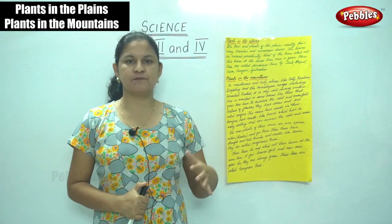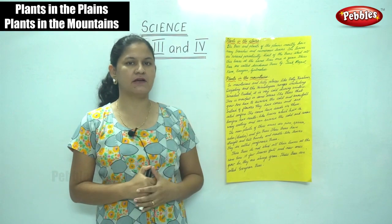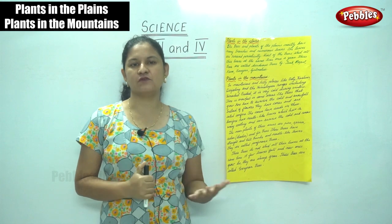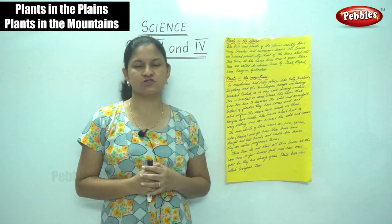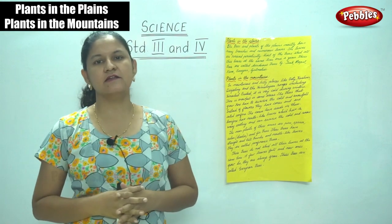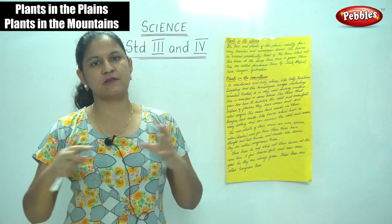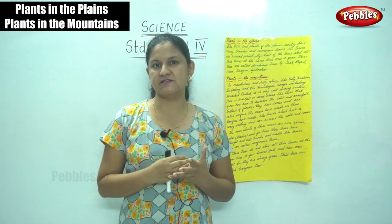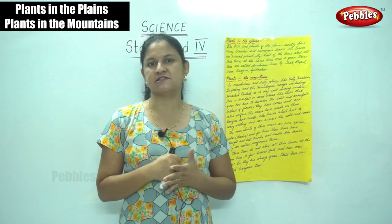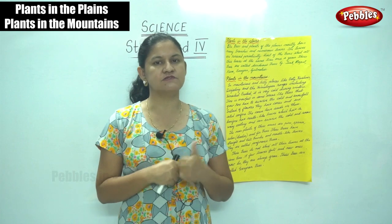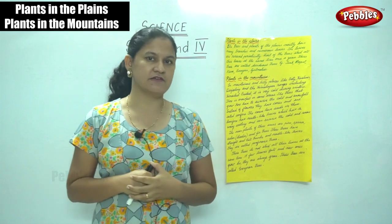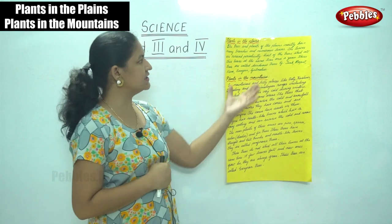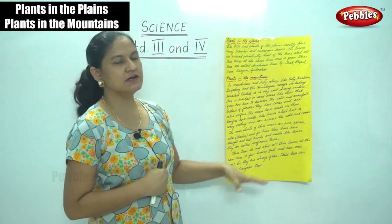Terrestrial plants are plants that grow on land and can be found in various geographical regions. Terrestrial plants can be classified into plants that live in plains, in mountains, deserts, in swamps, and in coastal areas. Now we are going to talk about plants that live in the plains.